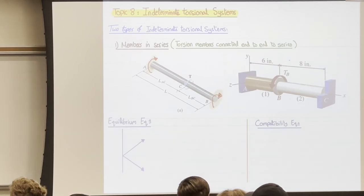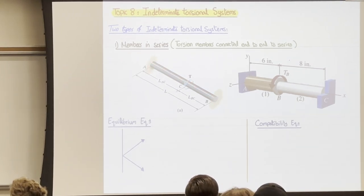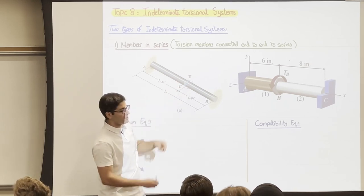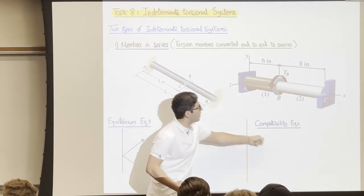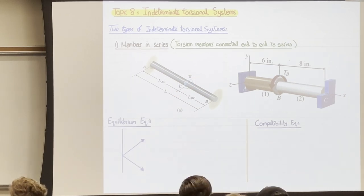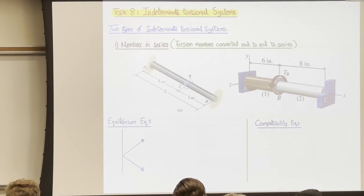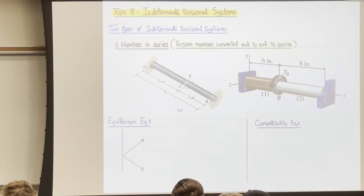For members in series, we locate where the applied torque is — here in the middle. Whether the torque is applied somewhere in the middle or via a plate, we take that plate out and cut member one and member two. We have two approaches for the equilibrium equation; the first one is the cut method.